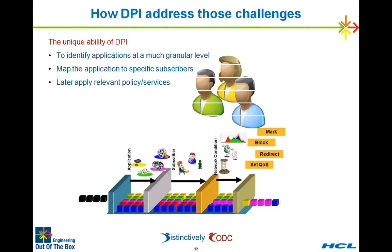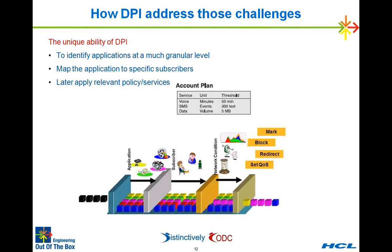Finally, we need to understand what the policies and plans are for that subscriber, and then act accordingly. For example, if a subscriber's voice plan is only 15 minutes and they're going on the 51st minute, I have to cut the call. That's a very basic, primitive example of what DPI can do — much larger capabilities exist. The typical functionality of DPI is to identify the application, figure out which subscriber is accessing it, map the subscriber's policies, and act accordingly.